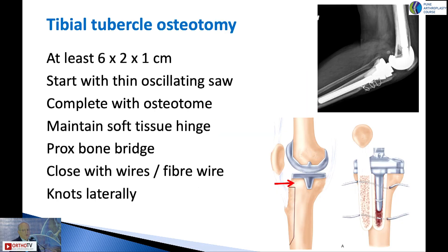Occasionally you need to do a tibial tubercle osteotomy. Make sure the osteotomy is a good chunk. Start medially with an oscillating saw but complete the lateral end with an osteotome, then flip it. The lateral soft tissue should be maintained — do not dissect it off. Maintain your proximal bone hinge; that's very important. Today we close the osteotomy with fibre wire with the knots kept laterally.